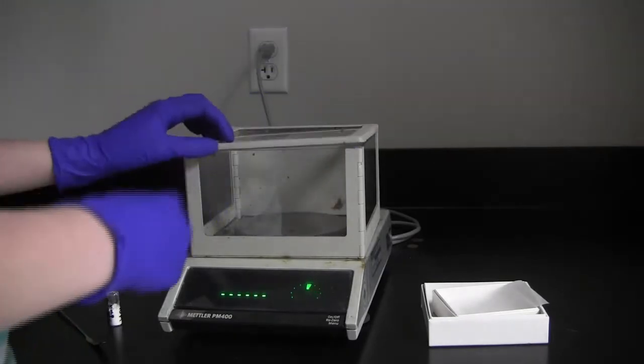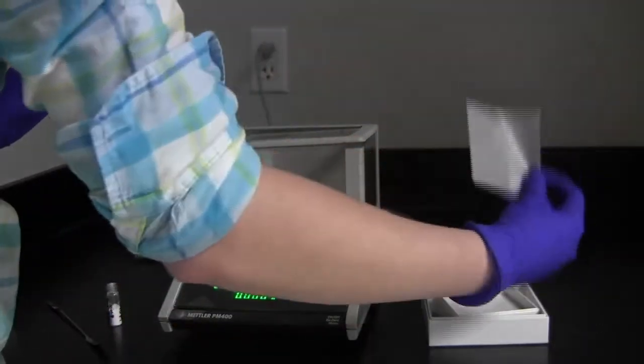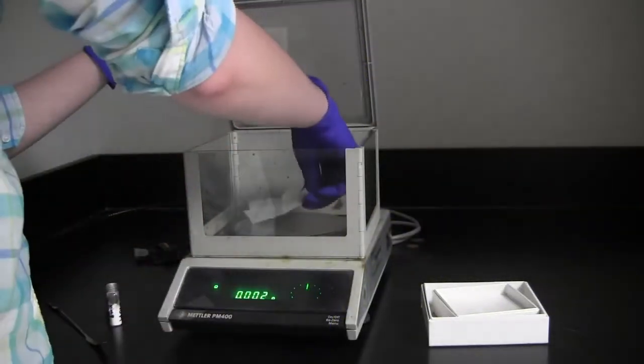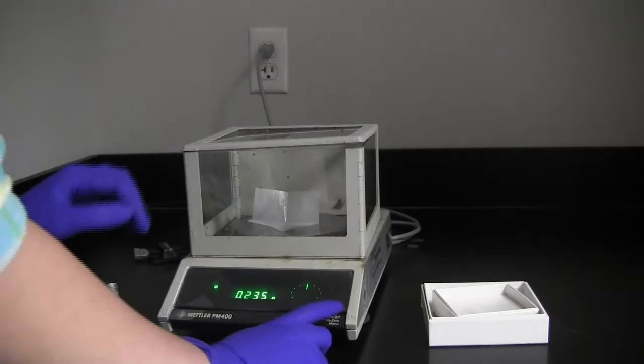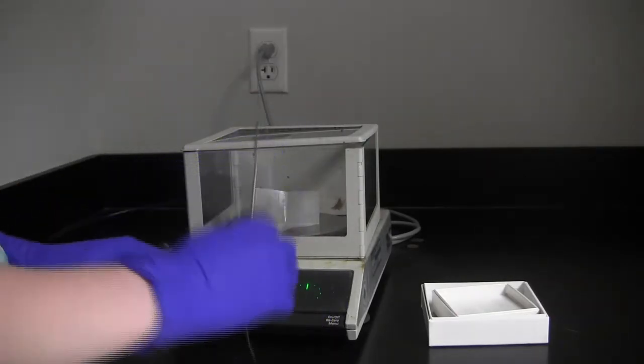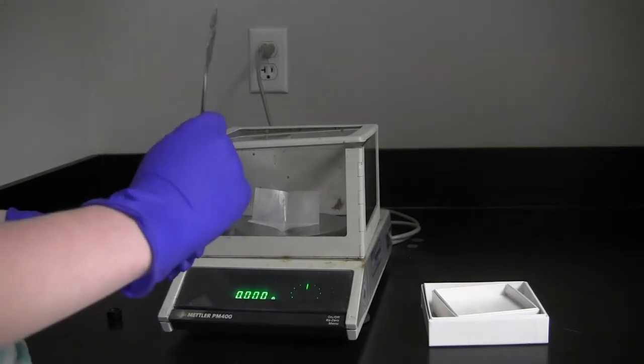Next, fold a piece of weighing paper into fourths. This will help when transferring your sample. Place the weighing paper on the scale and zero it by pressing the bar on the front. Make sure the LED screen says 0.00 grams, and then add your sample.